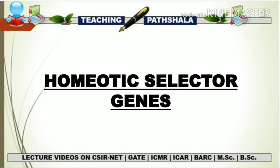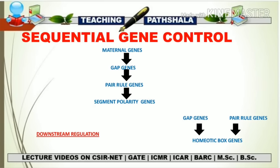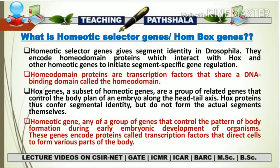The different gene groups show their expression in a sequential manner. The maternal gene helps in the expression of gap genes, which enhance pair rule genes, which in turn regulate segment polarity genes. However, homeotic genes do not work sequentially — instead of segment polarity genes controlling them, it is the gap genes and pair rule genes that help control the expression of homeotic box genes, also known as homeotic selector genes.